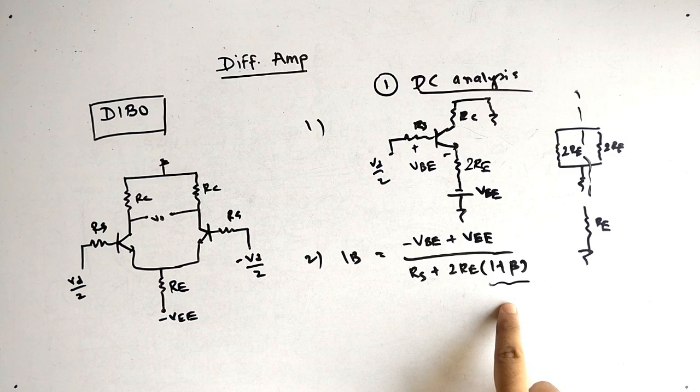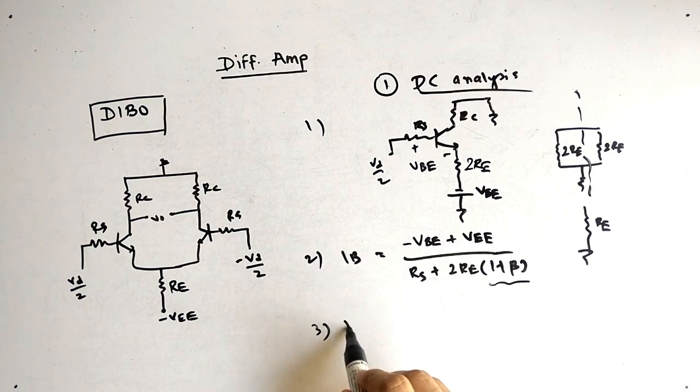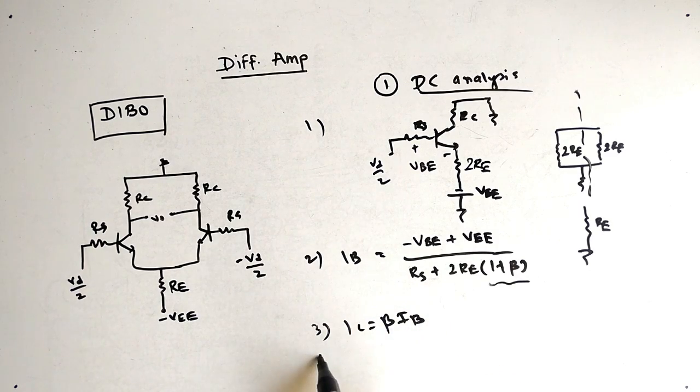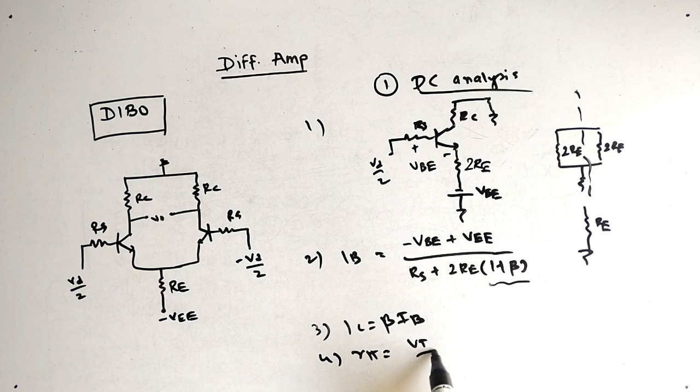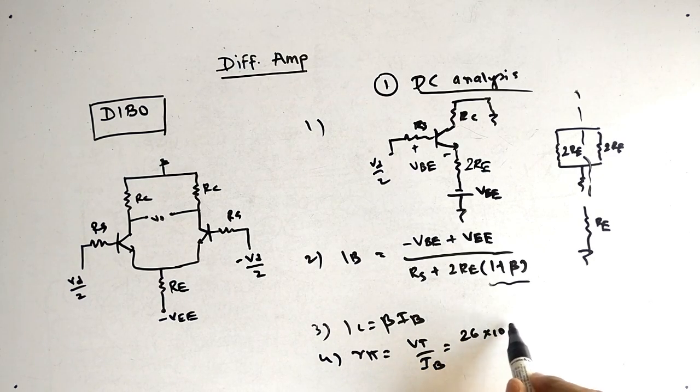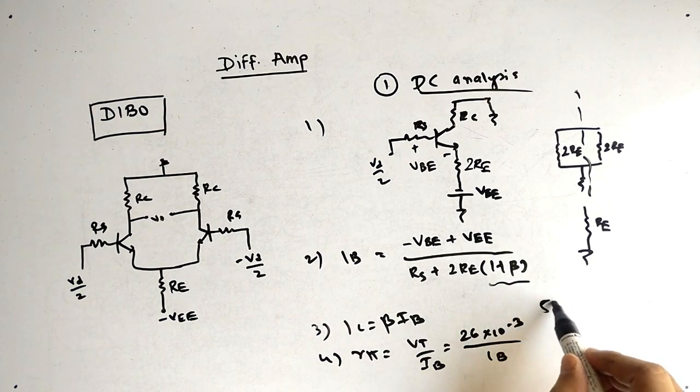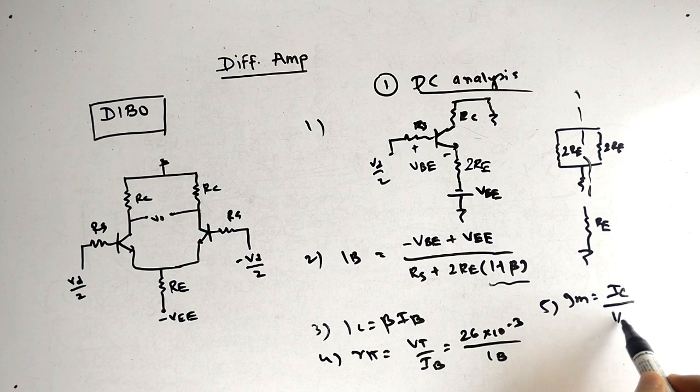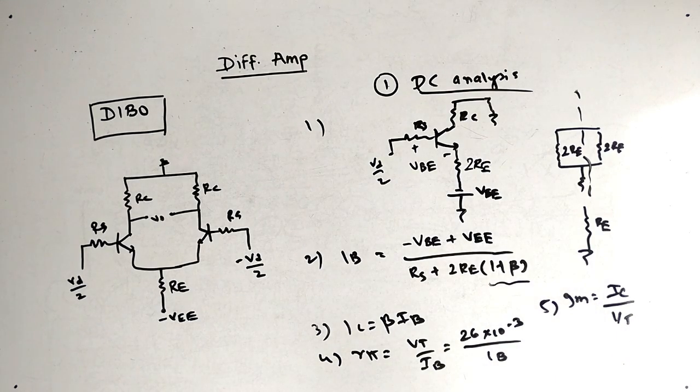So this is the value of IB. After that it is very simple. IC is beta times IB. Then we will have fourth point, that is Rpi. Rpi is VT by IB. VT value is 26 into 10 raise to minus 3 upon IB. Then we will have GM. GM is again IC by VT. So we are done with DC analysis.